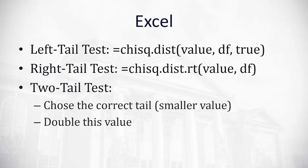For a right-tailed test, it's very similar but we'll have dot RT at the end, and we no longer need the TRUE. With a two-tailed test, we have to be careful — we have to choose the correct tail, either the left tail or the right tail, based on our sample. It'll always be the smaller value, and then we double that value to account for the second tail.